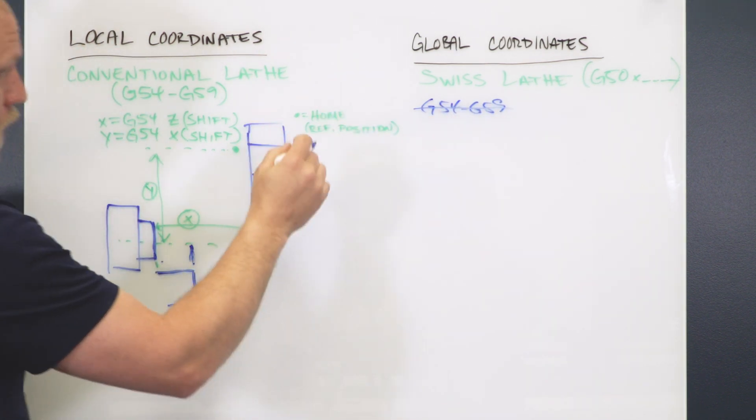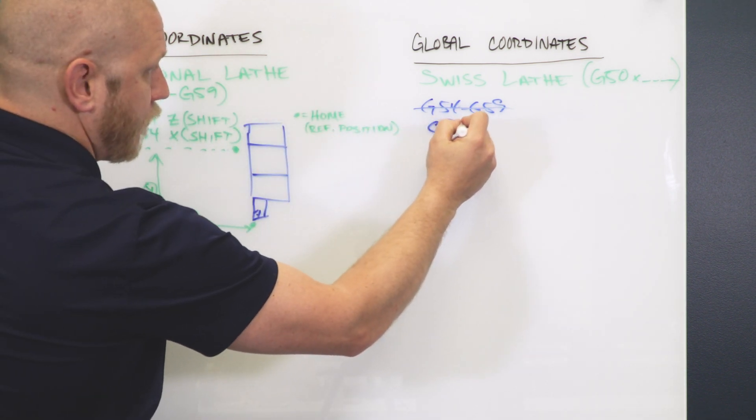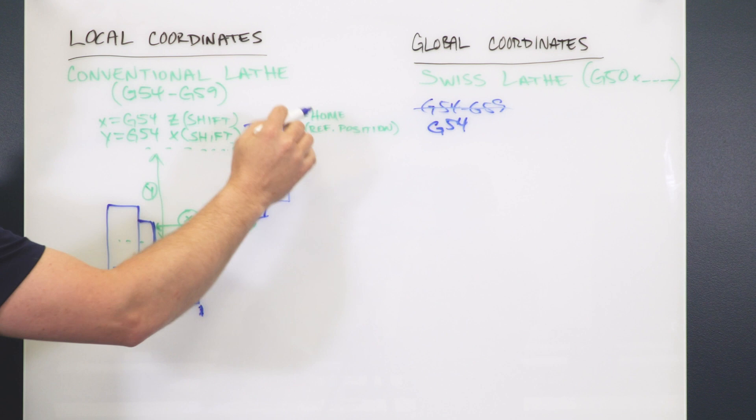So what it does is it always uses the reference position. It uses one coordinate system. You're always in G54 and it's machine position, home position.